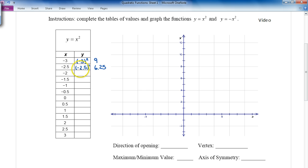And so now we don't have to write this every time. Negative 2 squared is 4, negative 1.5 squared is 2.25, negative 1 squared is 1, negative 0.5 squared is 0.25, 0 squared is 0, 0.5 squared is 0.25.